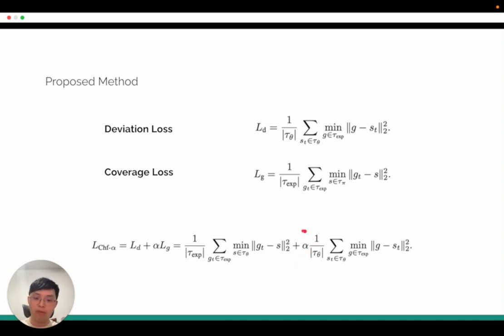And finally, we have a hyperparameter alpha to adjust the ratio between the deviation loss and the coverage loss. By doing so, we can create a more smooth optimization landscape, where the policies can select the easier targets to match. Therefore, the objective function is easier to be optimized.